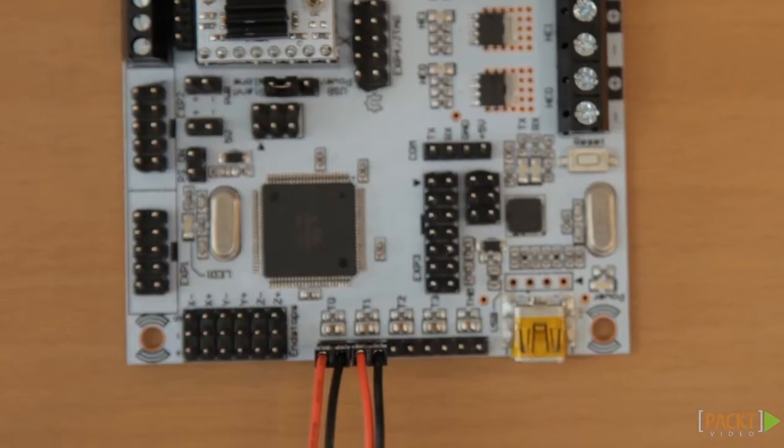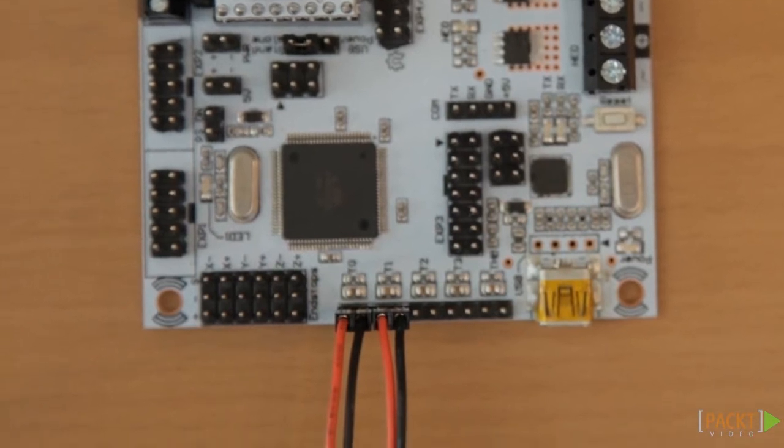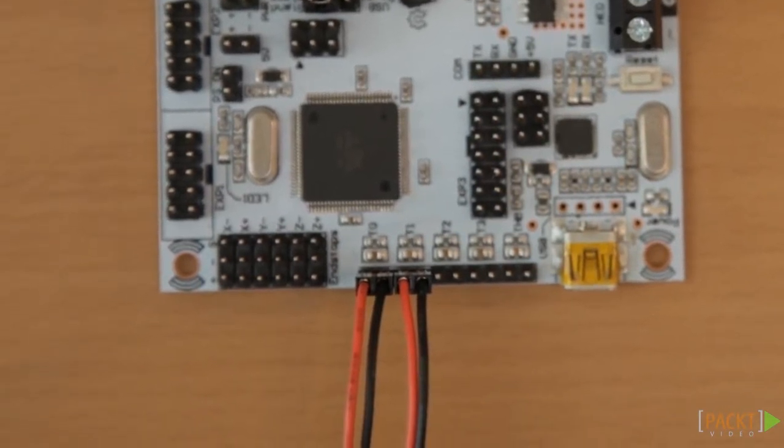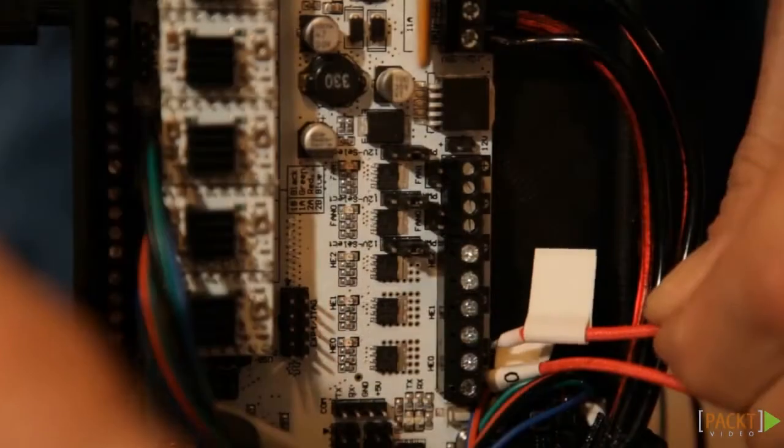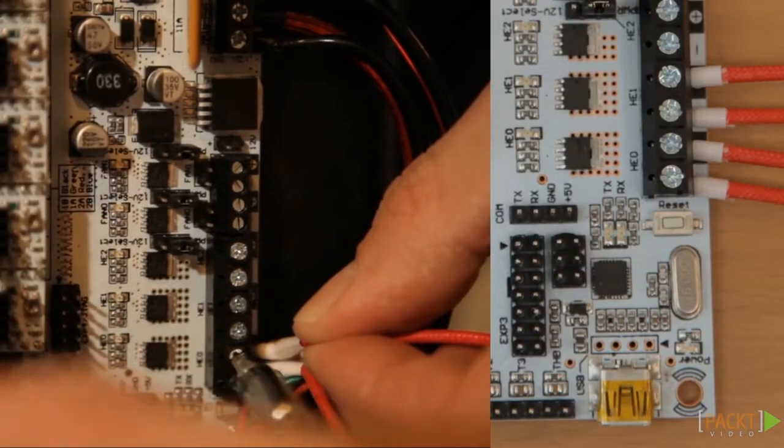First, connect the thermistor to the T0 and T1. To refresh your memory, the left extruder is numbered 0, the right one is numbered 1. Connect the heaters to HE0 and HE1.